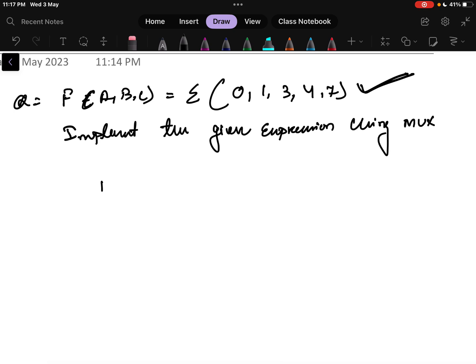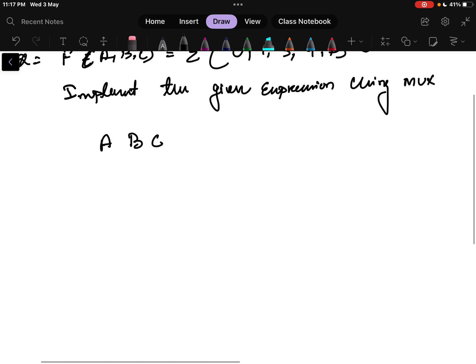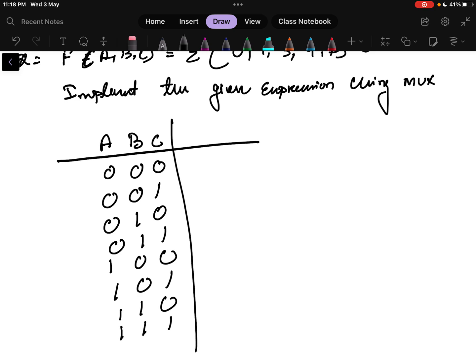Here clearly I know that there are three inputs which are A, B, and C. Write all possible combinations here: 0,0,0; 0,0,1; 0,1,0; 0,1,1; 1,0,0; 1,0,1; 1,1,0; 1,1,1. This is my input and that is my output which is my function.